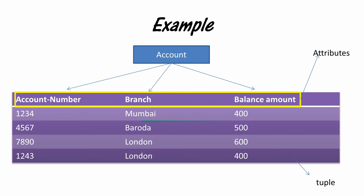The next thing is a row. A row represents data that is related to each other. For example, account number 4567 has its branch as Baroda and the balance amount of that account is 500. All this information is related to each other.